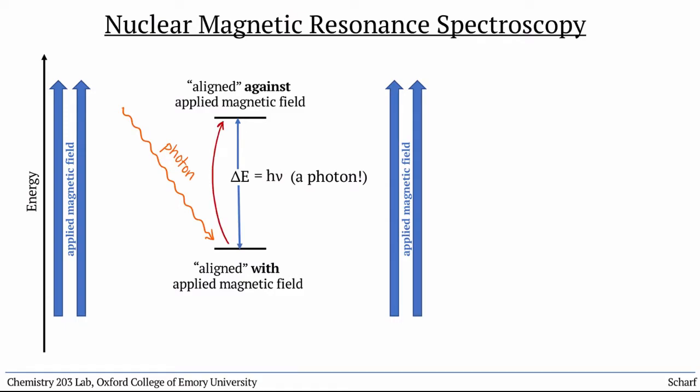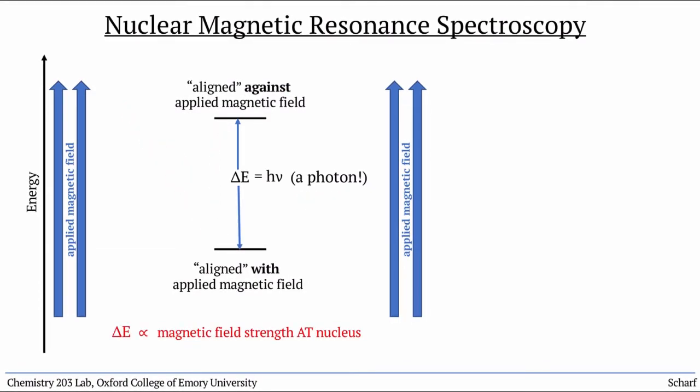It so happens that this energy difference is really quite tiny. So radio frequency photons are the ones typically involved. The precise magnitude of this energy difference is directly proportional to the strength of the magnetic field at the nucleus. Stronger magnetic field, bigger difference, absorbs higher frequency photons.